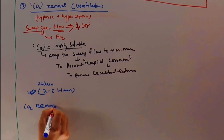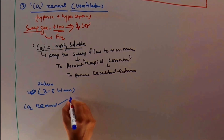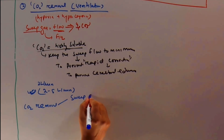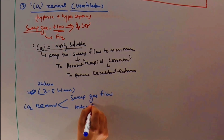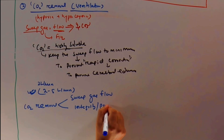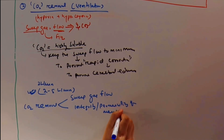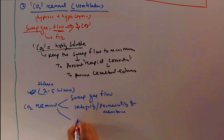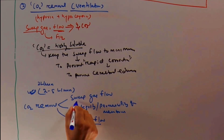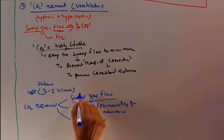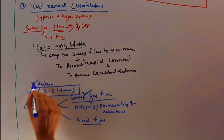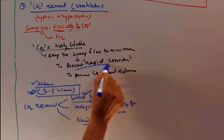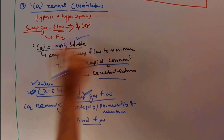Carbon dioxide removal depends on three things: number one is the sweep gas flow; number two is the integrity or permeability of the membrane; and number three is blood flow — though blood flow is the minimum factor for CO2 removal. For CO2 removal, maximize the sweep gas flow. The usual setting is 2 to 5 liters per minute; start at minimum in the beginning to prevent rapid correction and cerebral edema.